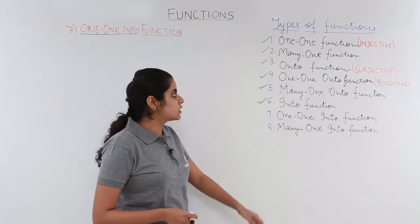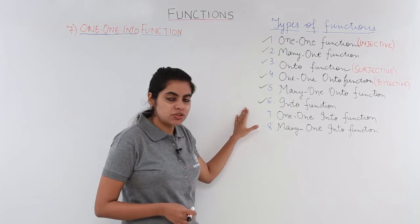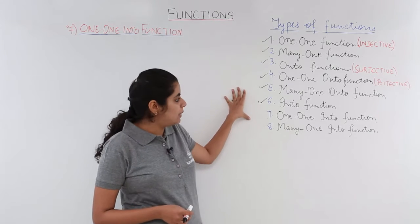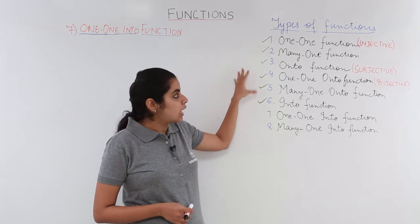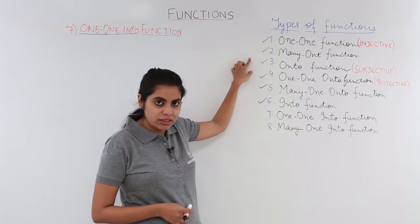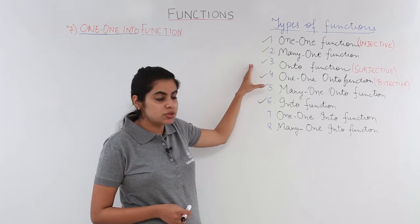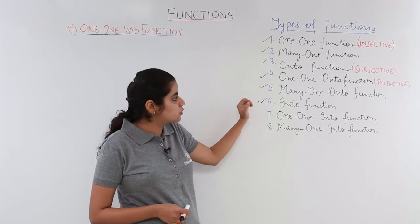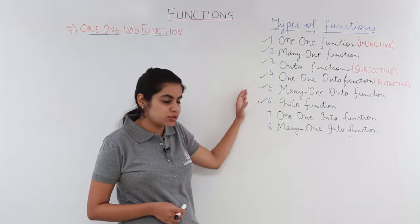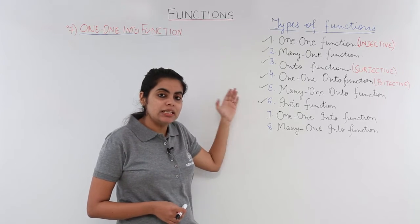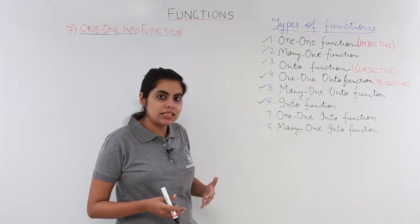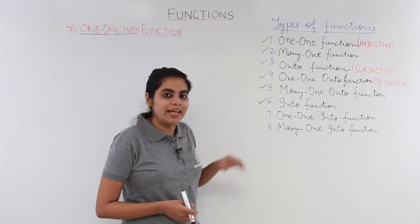We have already talked about all these types of functions with which I have put a black marker tick. These functions are one-one function, many-one function, onto function, one-one onto function, many-one onto function, and into function. The next function type in the series is one-one into function.